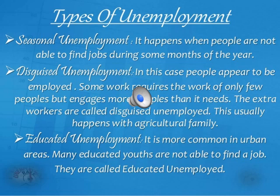Disguised unemployment is when people appear to be employed, but some work requires only a few workers while more people than needed are engaged. The extra workers are called disguised unemployed. This usually happens in agricultural families — for example, when only three people are needed to work on a piece of land but five people are working there, the two extra people are unnecessarily employed and are disguisedly unemployed.